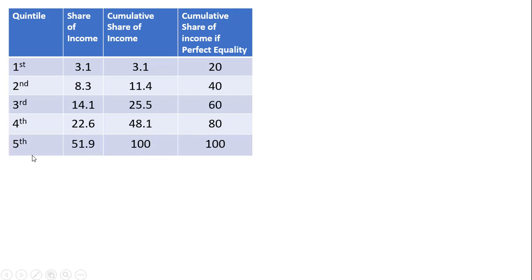Finally, share of income going to all the households is 100%, which is 51.9% plus 48.1%. This other column would be the share of income going to each income quintile if we had perfect income equality. The bottom 20% earns 20% of the income, the bottom 40% earns 40%, the bottom 60% earns 60%, and so on.